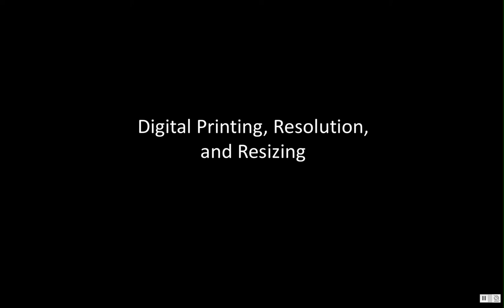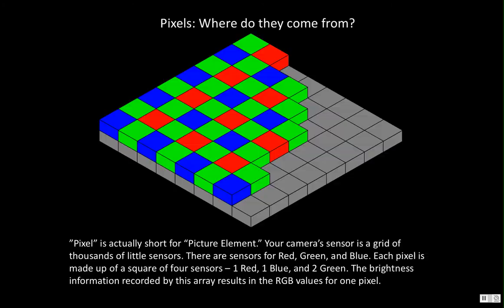In this video I want to discuss resolution and resizing as it relates to digital printing. I want to start by thinking about where do pixels come from? We hear pixels, we know what a pixel looks like when we look at it on screen if we're really zoomed in on an image in Photoshop, but where do pixels come from?